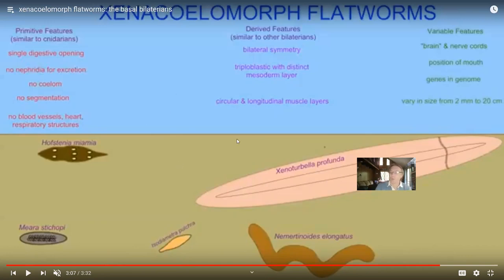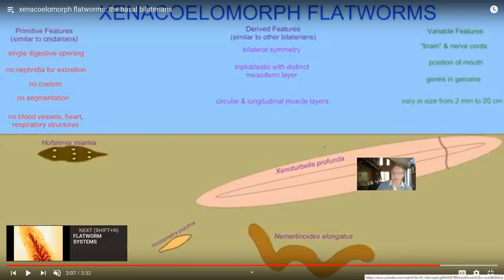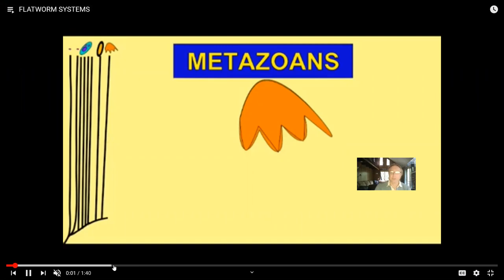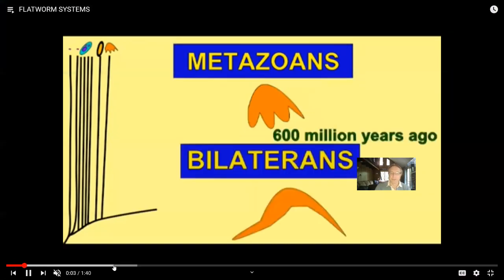In any case, there are a small number of flatworms alive today that, even in the second classification system, seem to be intermediate between cnidarians and all later groups of animals. Now I'd like to talk about the groups which most people consider to be flatworms. When you use the term flatworm, most individuals are not referring to acoels — they're referring to planaria, tapeworms, and flukes.